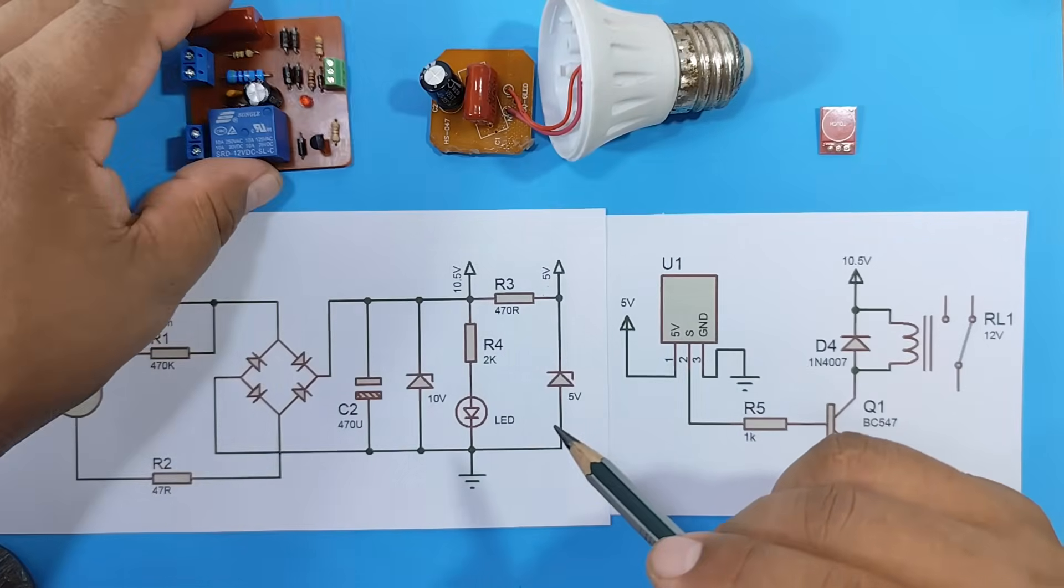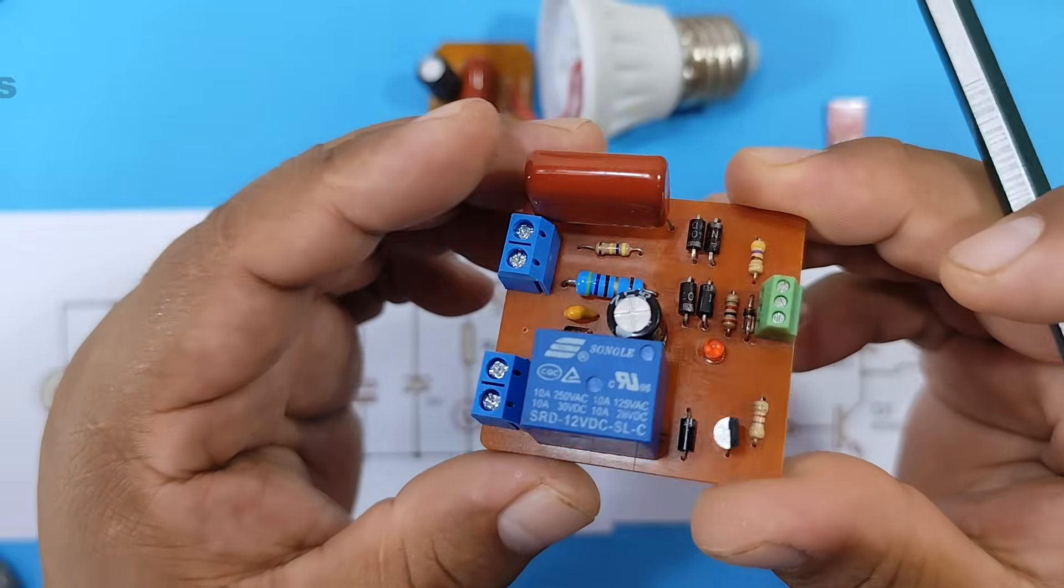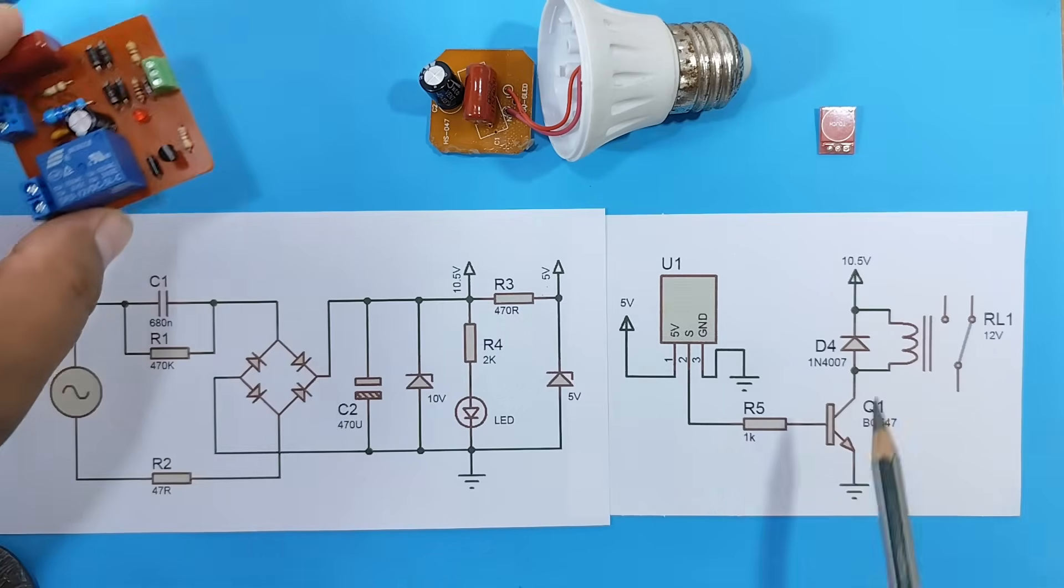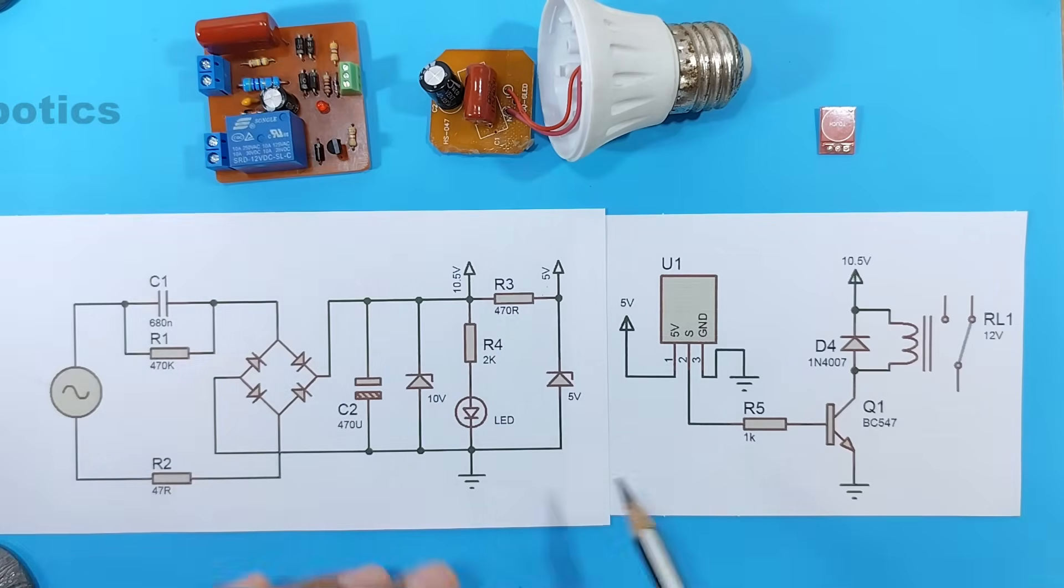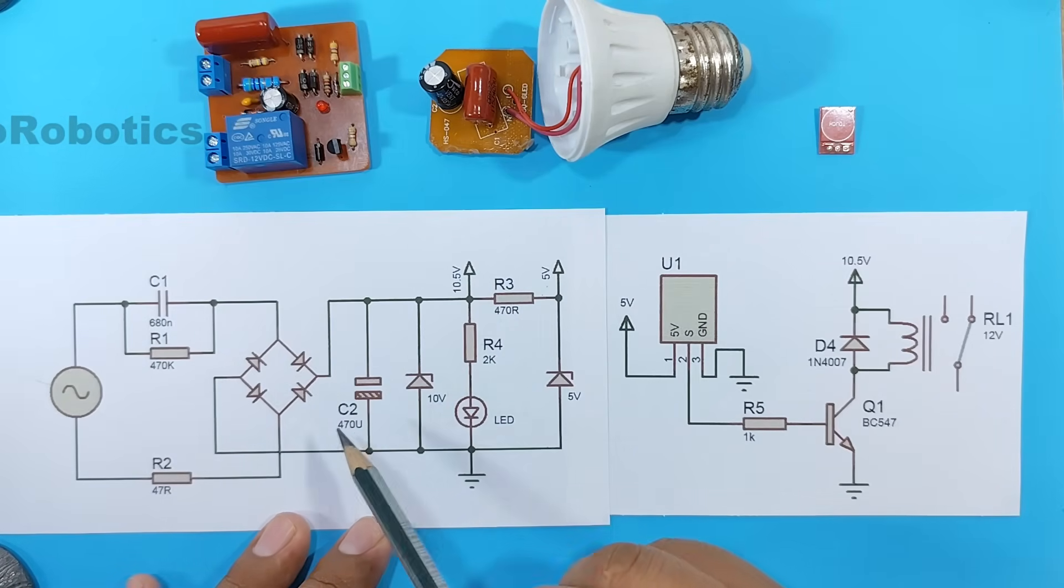Now let's see how our electronic board works. For that, we have these two circuits. This circuit represents the power supply, which is a capacitive source.